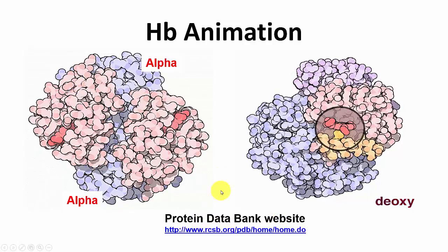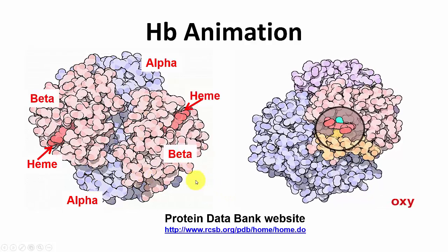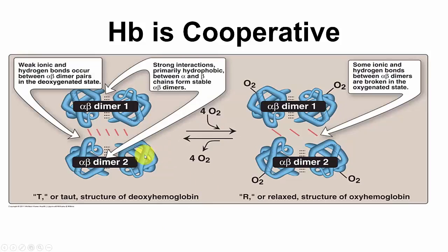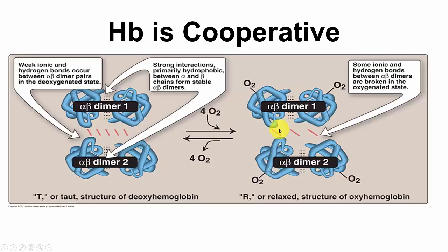In the hemoglobin model, the alpha subunits are in blue, the beta subunits in red, the hemes are embedded within, and BPG binds in the middle. When oxygen binds to the alpha-beta dimer, movement occurs between the two units. The deoxy form is called T (taut), and when oxygen binds, the relaxed (R) form of oxyhemoglobin results, with fewer bonds between subunits than in the taut form.